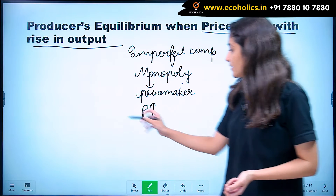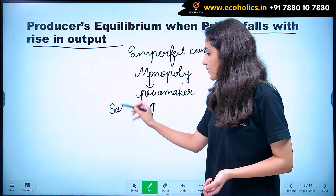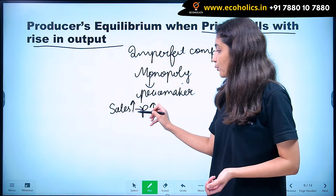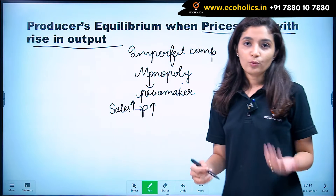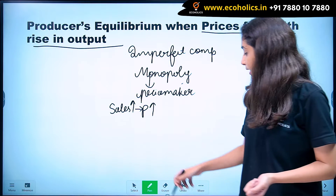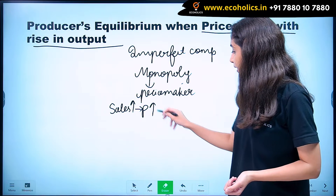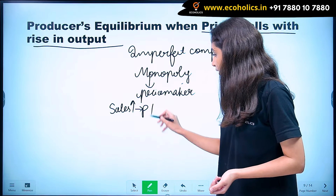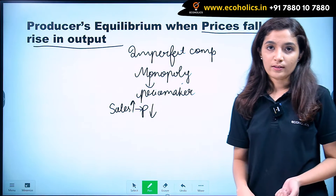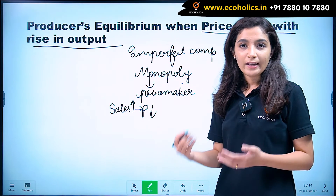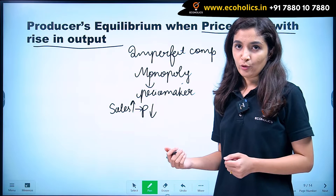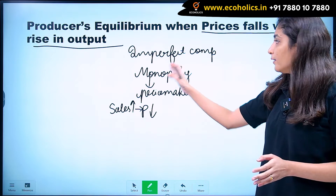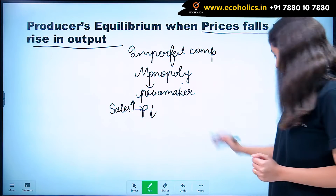So if the monopolist wants to increase his sales, meaning if he wants to sell more output, then obviously he has to reduce the price of his goods. Only then he can sell more output. This is what characterizes imperfect competition.